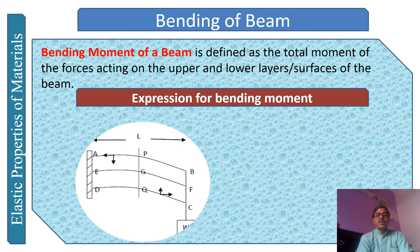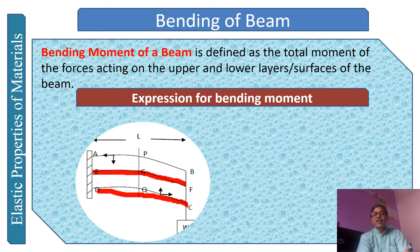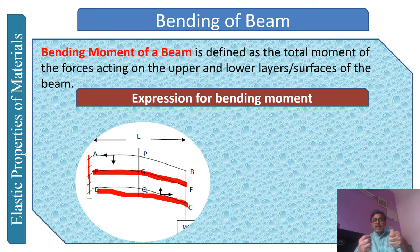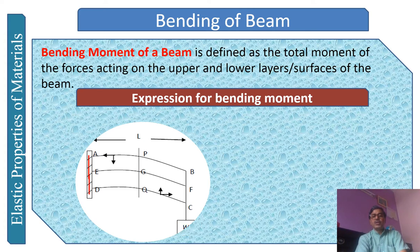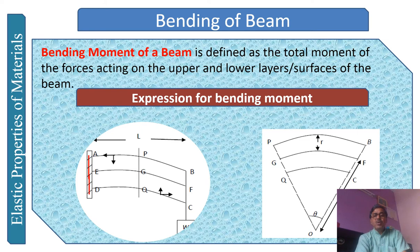We consider the beam ABCD where AB is the topmost layer, CD is the bottommost layer, and EF in between is the neutral axis. One end of the beam is fixed — just like holding the scale in your hand — and the load W is applied at the other end. A small part of this beam, PBGFQC, has been taken for analysis.